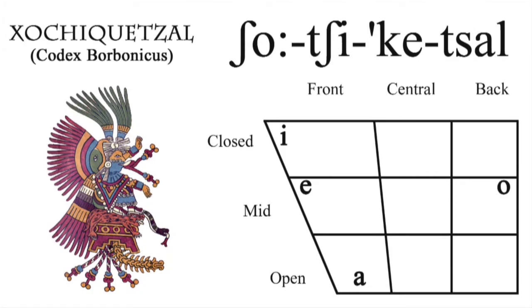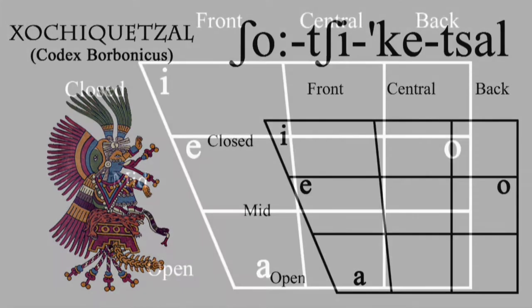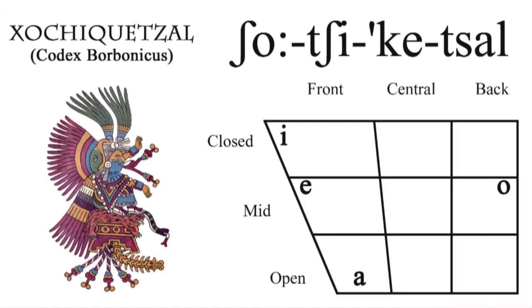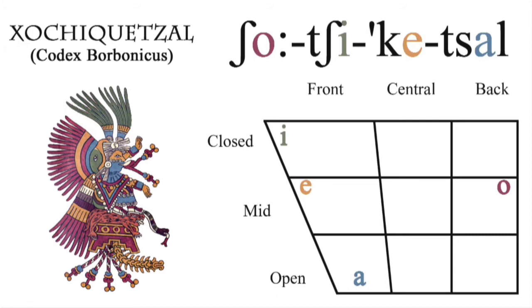Nahuatl has four main vowels, and this short video will make a few comments about how they are pronounced. If you are familiar with Spanish, the vowels of Nahuatl will sound very similar: I, E, A, O. Because this series is dedicated to Nahuatl for Aztec religion, I start this episode with a goddess whose name has all four pronunciations — Xochiquetzal. Her name means 'Flower Quetzal,' a reference to the elegant green plumes of the famous tropical bird. At right is a simplified chart mapping the vowels of Nahuatl by two dimensions: the place of the tongue in the mouth from front to back, and how far the jaw opens from top to bottom. I have color-coded the vowels to where they sound in the name.